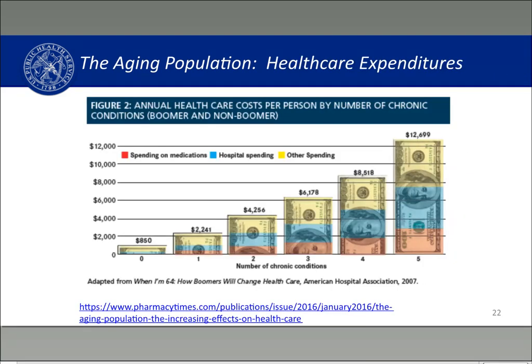These modern advances in health also come with a price tag. With each additional chronic disease that an older American has, there are additional per capita costs. Someone with five chronic conditions will bring an additional $12,699 in per capita costs on average.